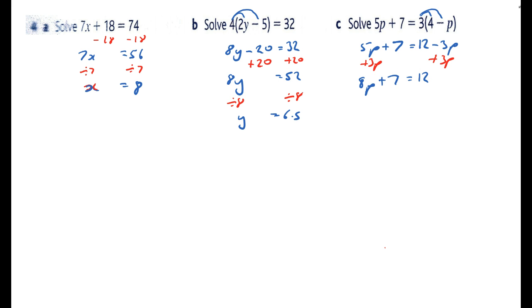Now at this stage I'm going to have to get rid of my plus 7, so I have to take away 7 from both sides and so I get 8p equals 5. I have to divide both sides by 8, and so p equals 5 eighths and that's done.